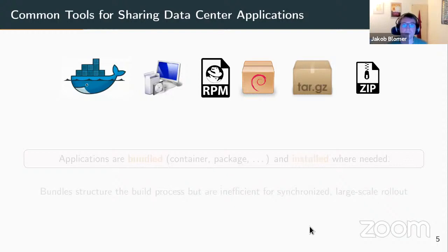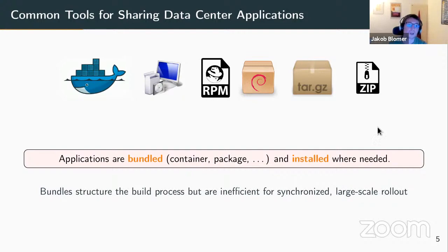If you look at common tools for sharing data center applications, they are all bundle or package based — Docker, but also more traditional packages like Windows installer, RPM, Debian packages and so on. Applications get bundled ahead of time and installed everywhere. That is an efficient way to structure the build process, but it is actually quite an inefficient way for the large-scale rollout, as we'll see on the next slide.